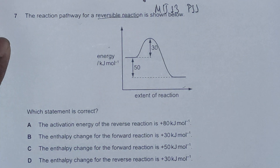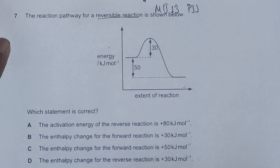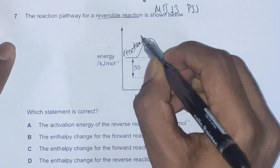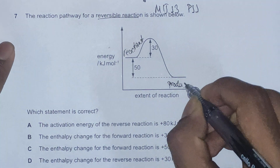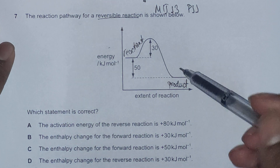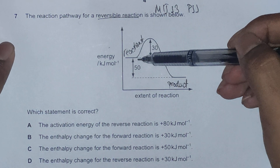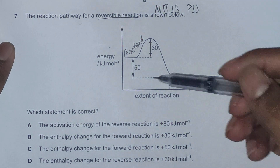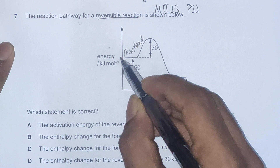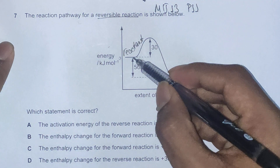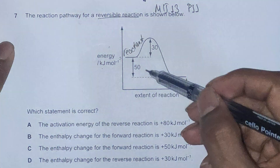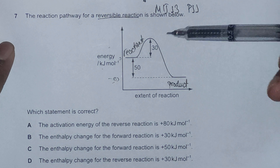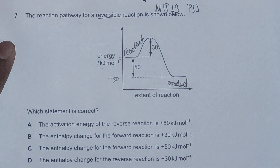Some important things we need to realize on energy diagrams: this is the reactant for the forward reaction, and this is the product. Because on the energy profile the reactant is on a higher level than the product, the forward reaction is exothermic — energy is being released. So if this is zero, we are going down by 50 units, giving negative 50 kilojoules per mole, which confirms the reaction is exothermic.